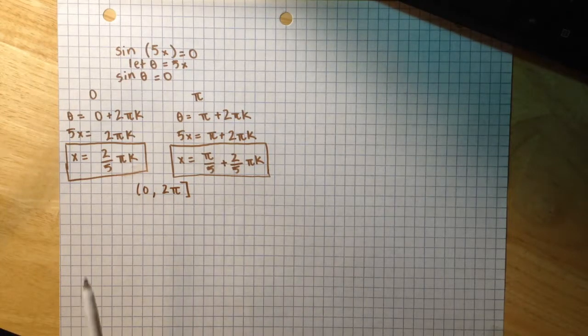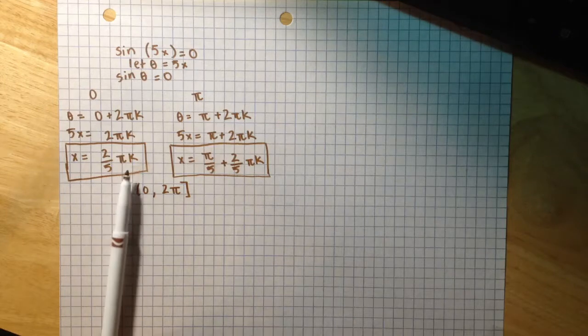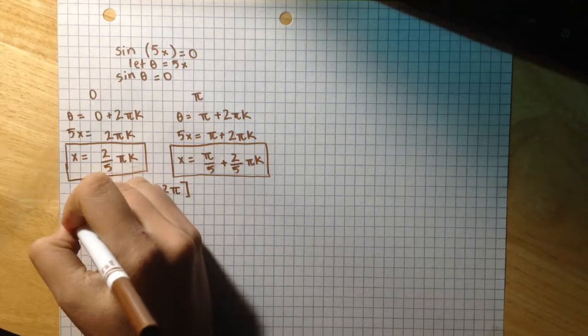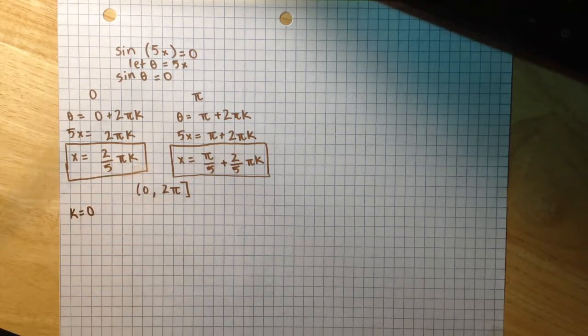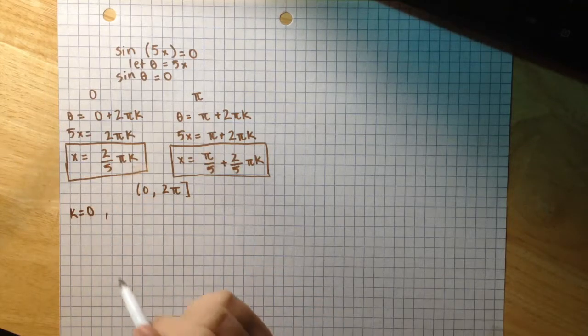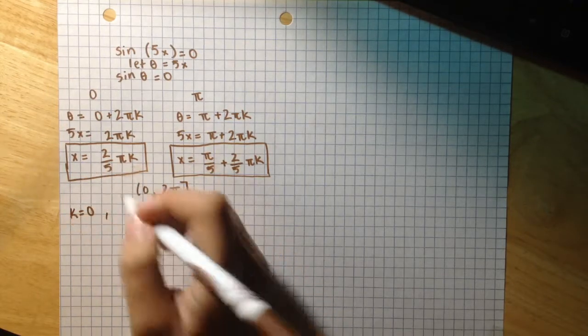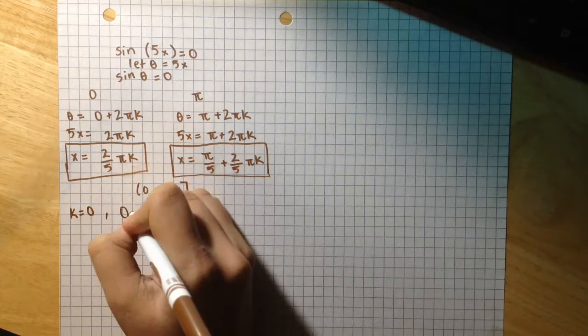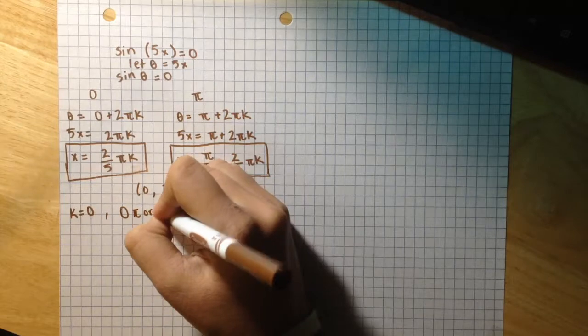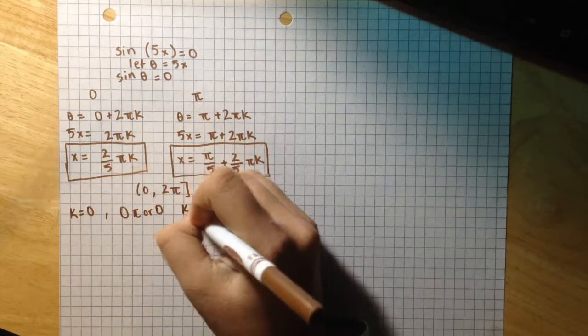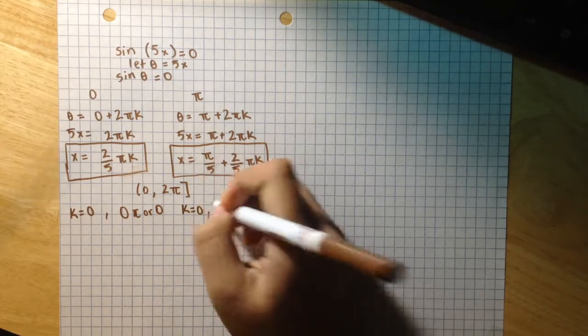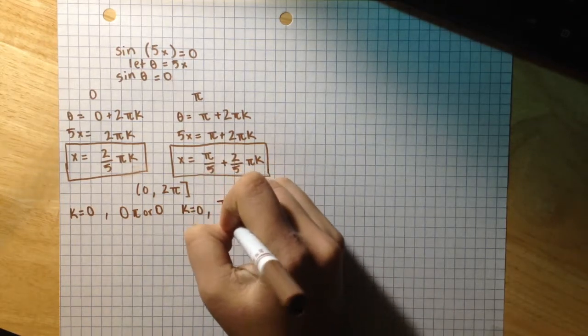So to do this, I'm just going to start out by substituting whole numbers into the k constant values. So let's start with k equals 0. If k equals 0, we will have x equal to 0 over here, and our answer is π/5.